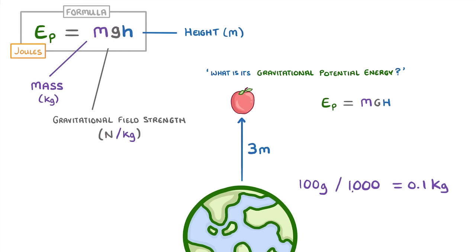Next, all we need to do is plug these values into the equation. So our calculation becomes 0.1 times 9.8, which is the gravitational field strength for Earth, times 3, which is our height. And this gives us 2.94 joules as our answer.